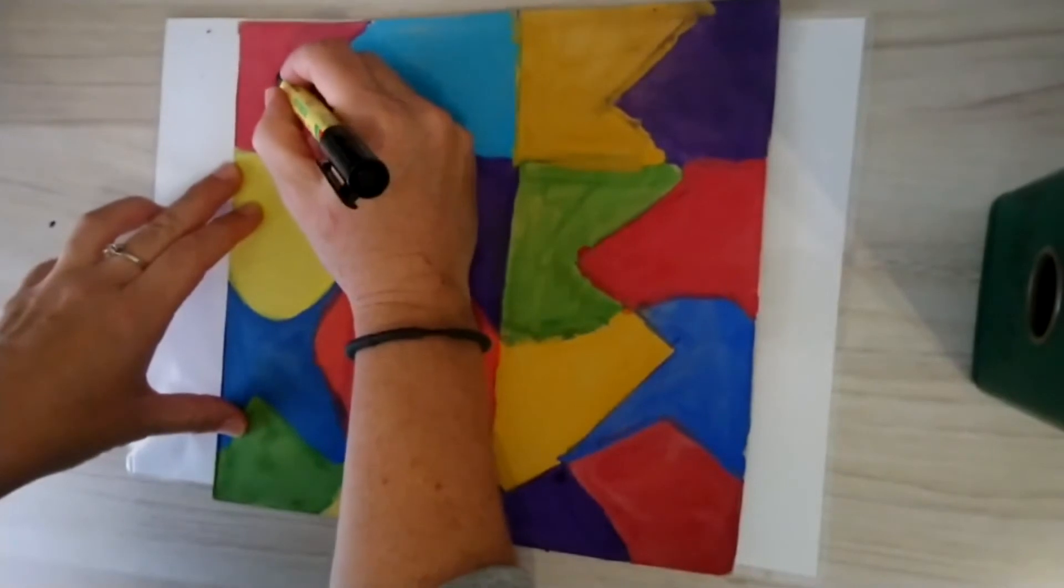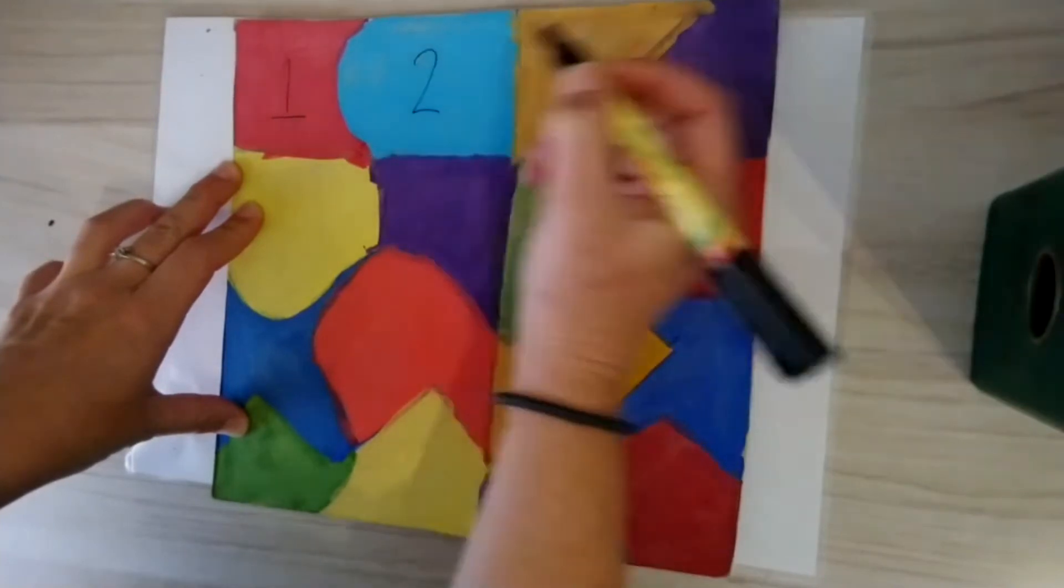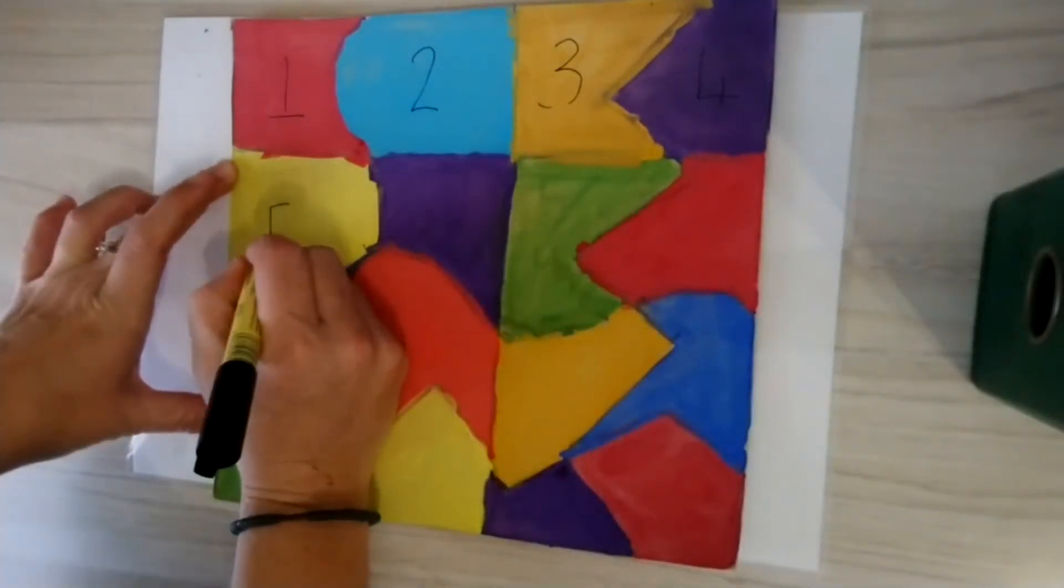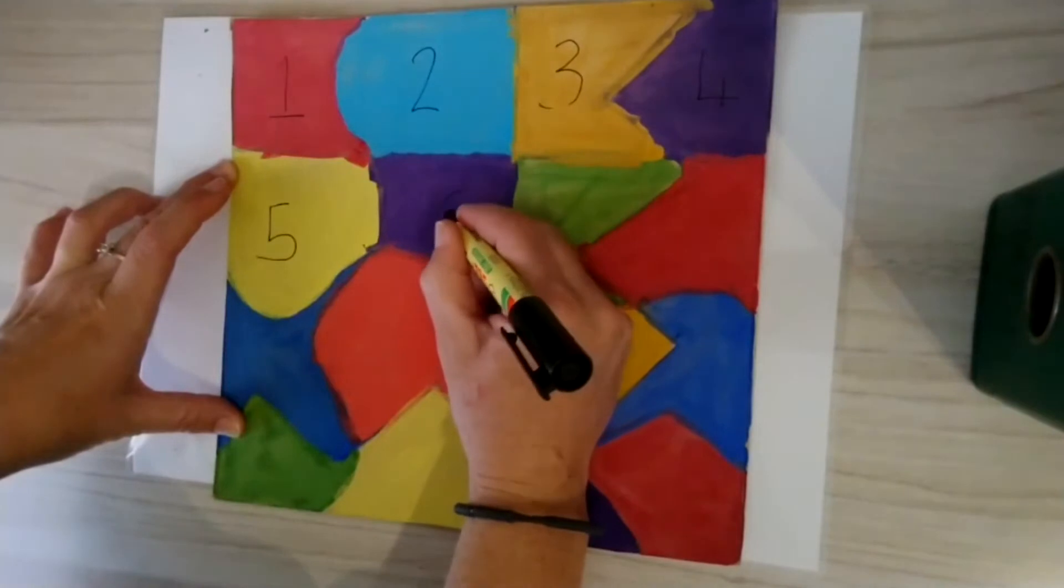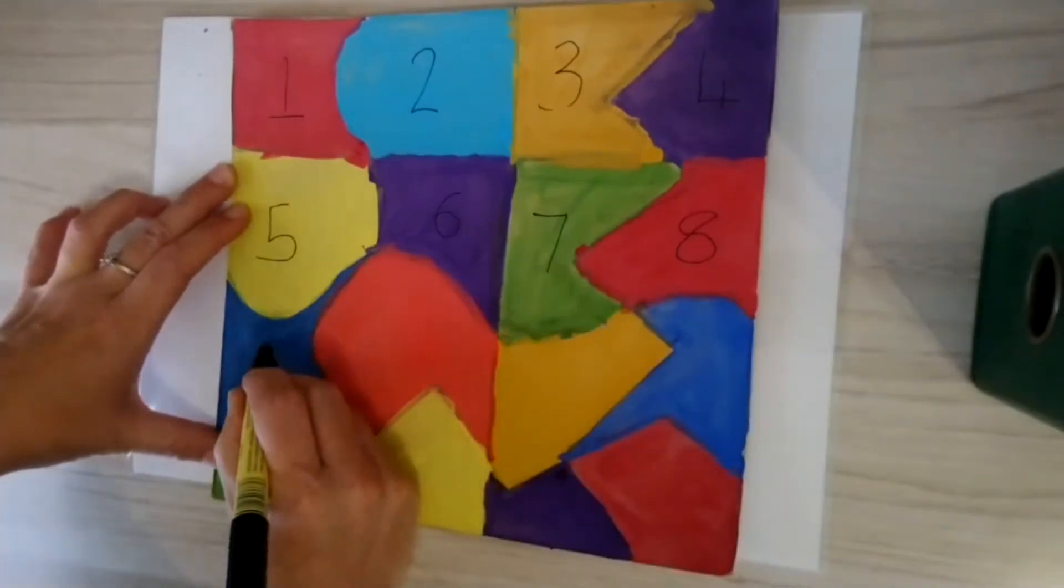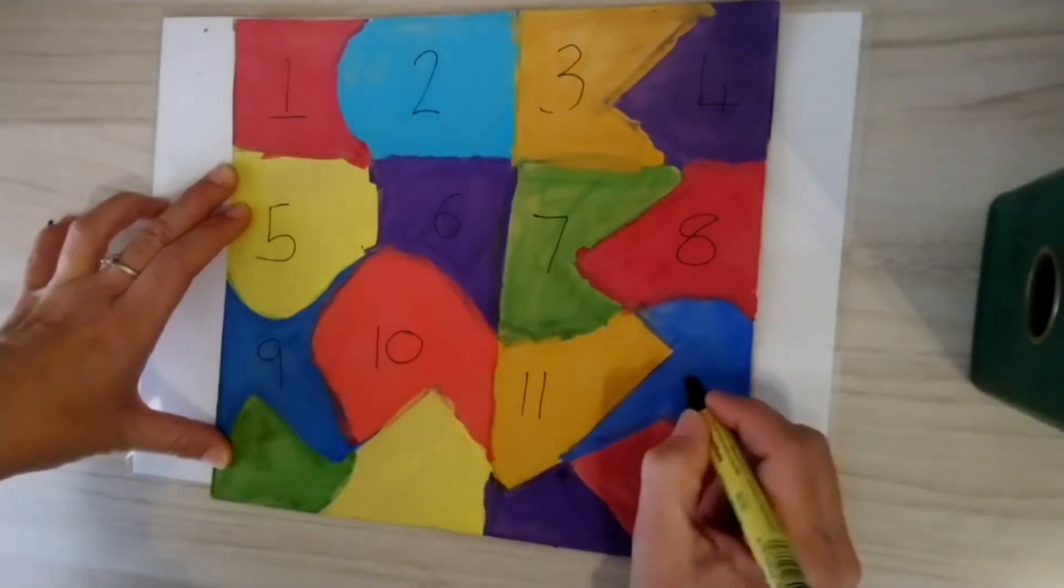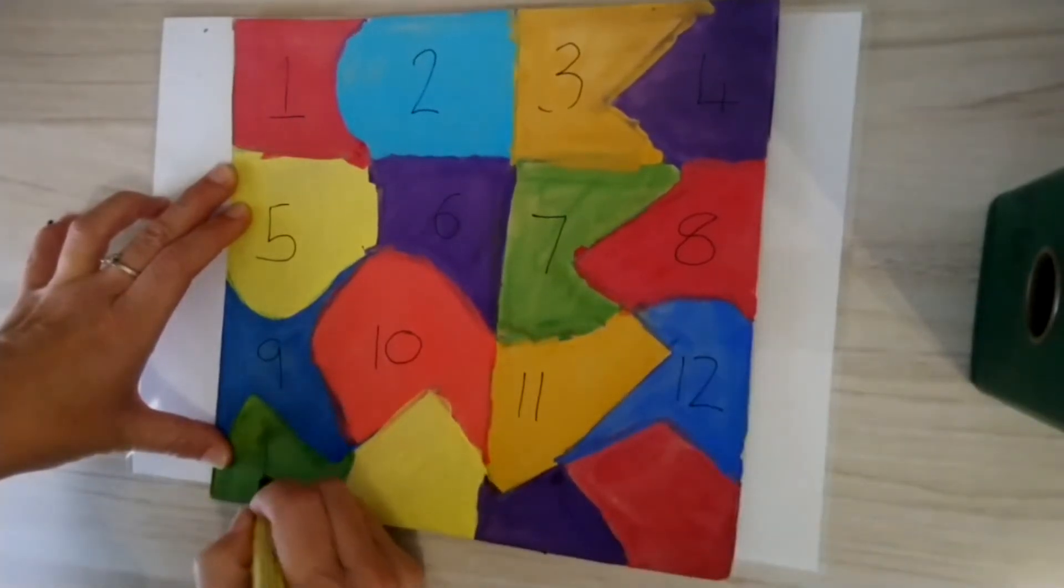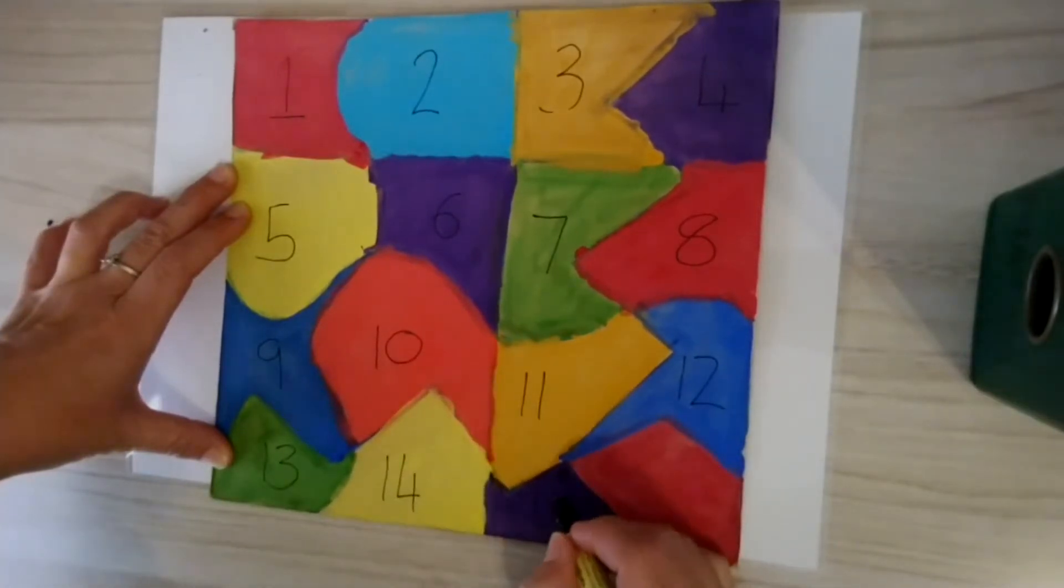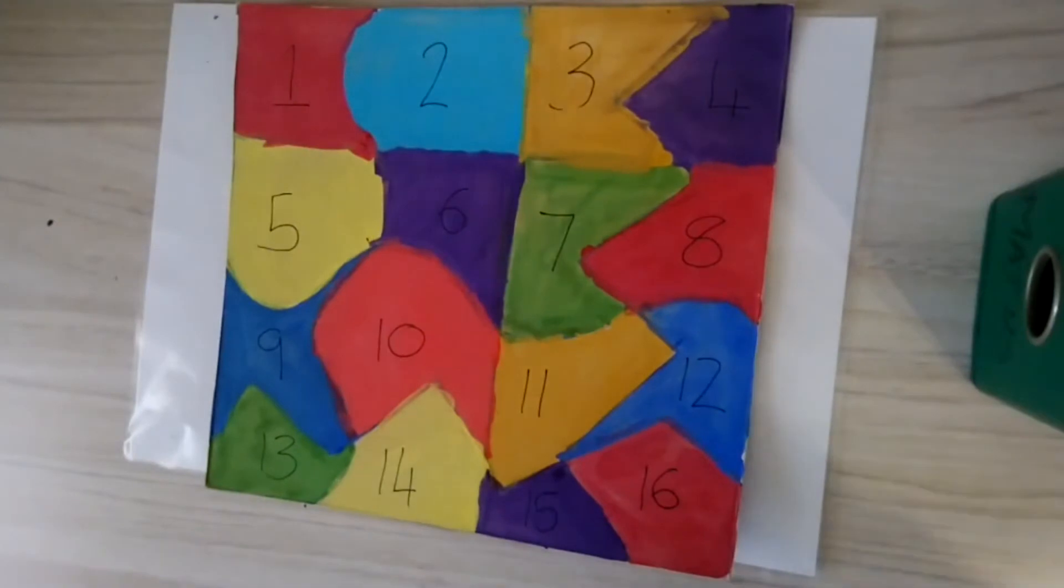One, two, three, four, five, six, seven, eight, nine, ten, eleven, twelve, thirteen, fourteen, fifteen, and sixteen. Wow. So I have sixteen pieces for my puzzle.